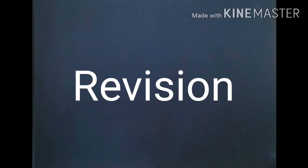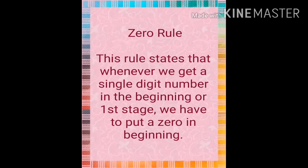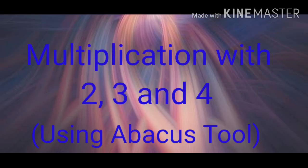First of all in this video we will do a quick revision of the previous things, like the zero rule. This rule states that whenever you get a single digit number in the first place, you will apply the zero in front of it. Then we have studied about multiplication with 2, 3, and 4 using the Abacus tool.